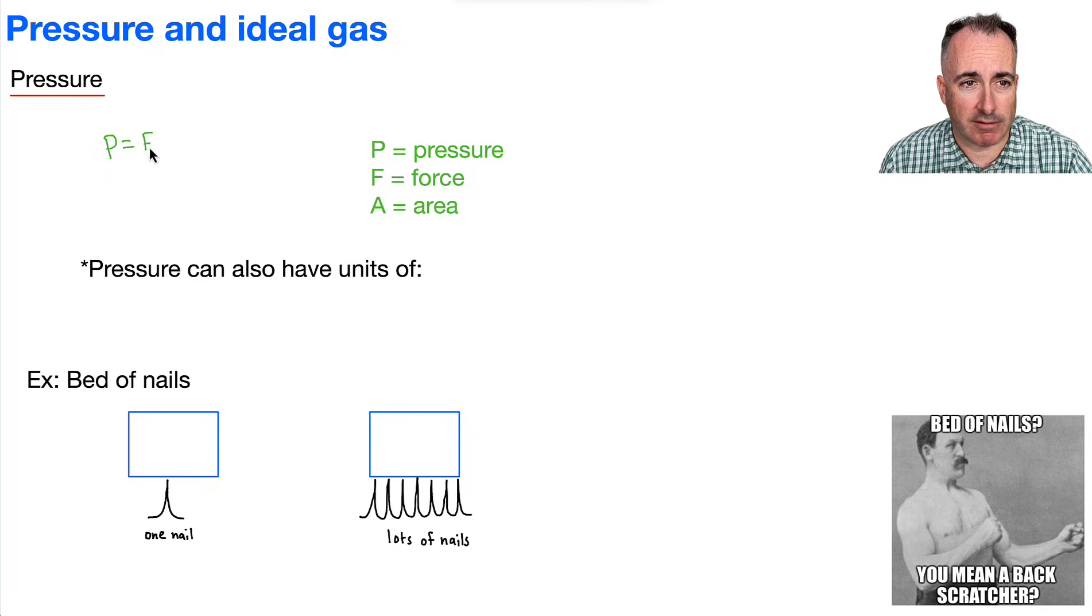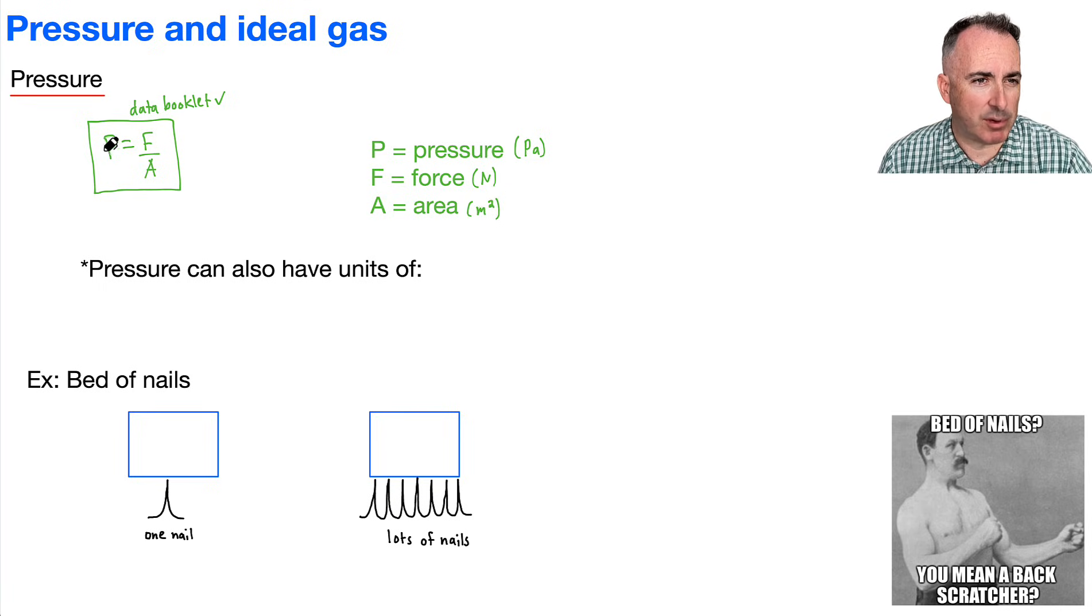So what kind of units do we have? Pressure is measured in pascals, mostly. Force is measured in newtons. Area is measured in meters squared. But that means if you've got pressure is force over area, it could also have units of newtons over area, which is meters squared. So pressure is also in newtons per meters squared.